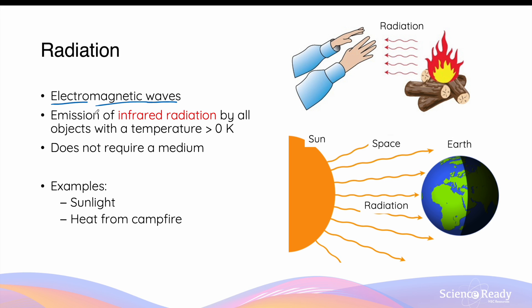Radiation involves the transfer of heat through the emission of electromagnetic waves — specifically, in the context of thermal radiation, we refer to the emission of infrared radiation. All objects with a temperature greater than zero kelvins (above absolute zero) emit some amount of infrared radiation. The most important point about radiation is that this mode of energy transfer does not require a medium, meaning it can occur in a vacuum. Unlike conduction and convection, which require the presence and movement or vibration of particles, radiation does not.